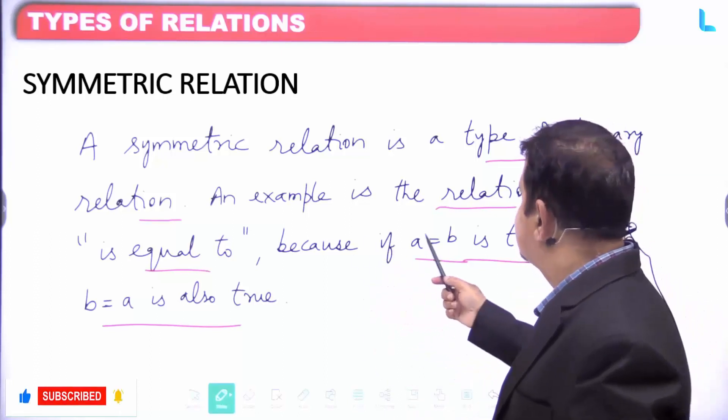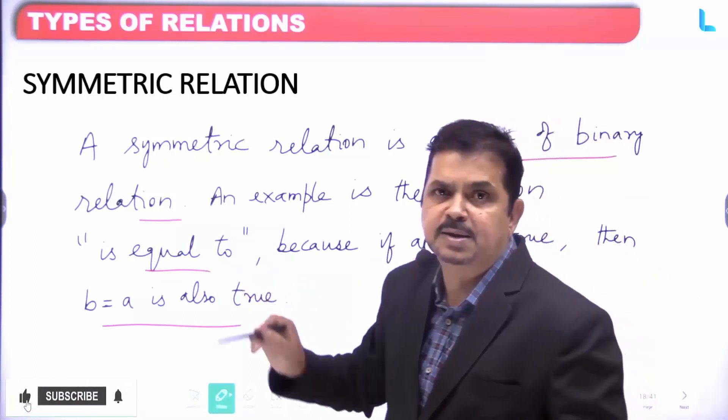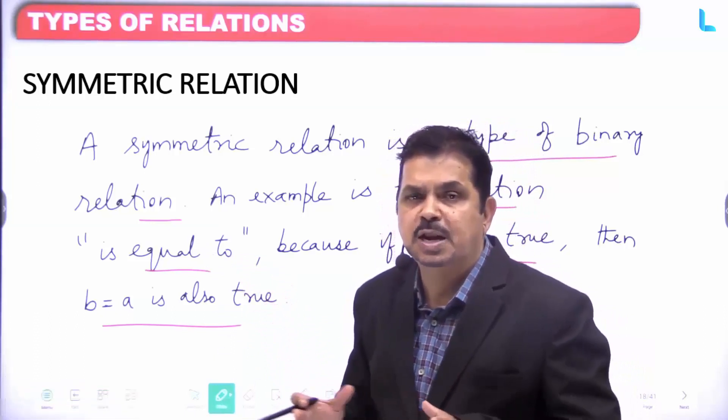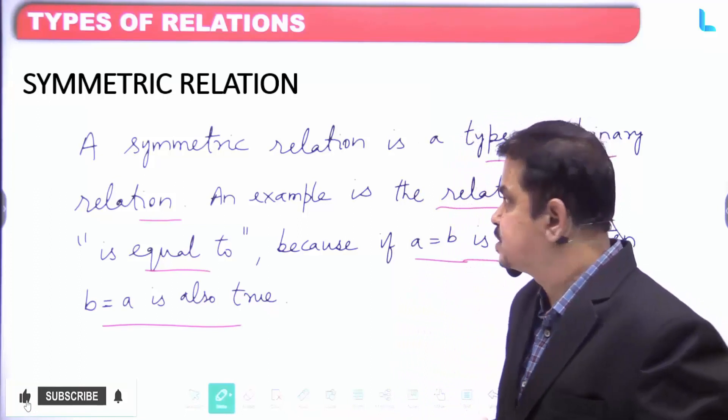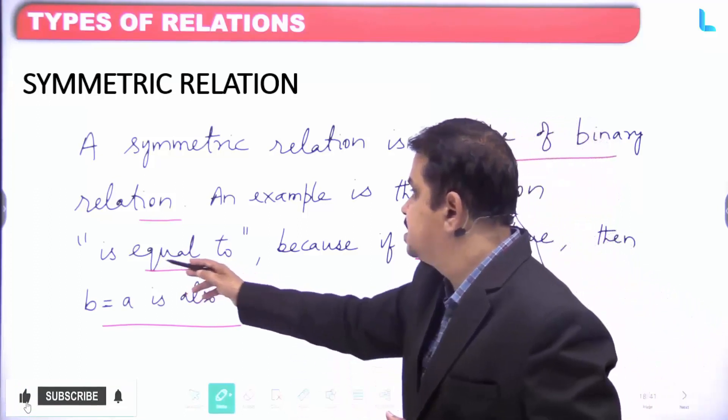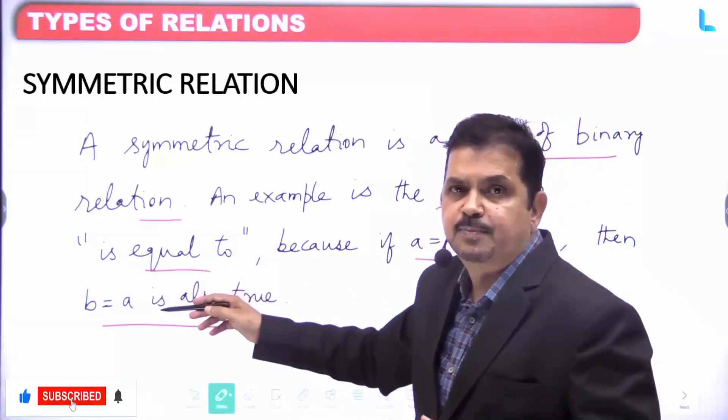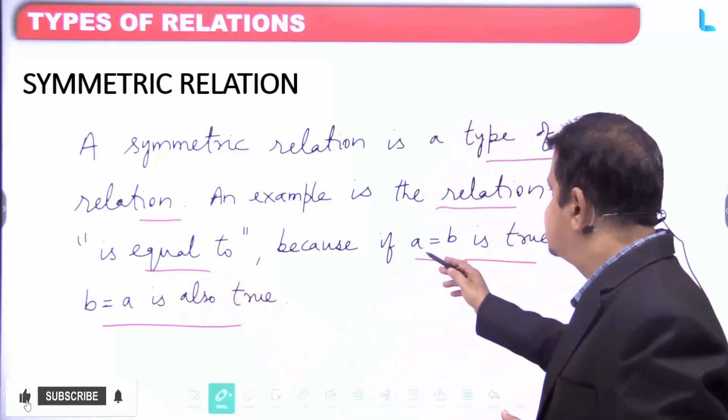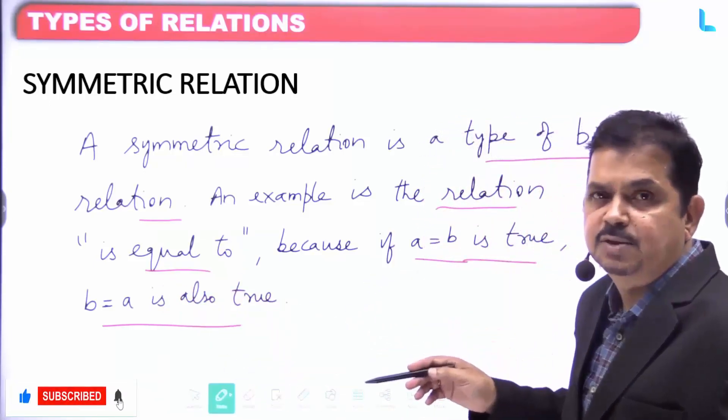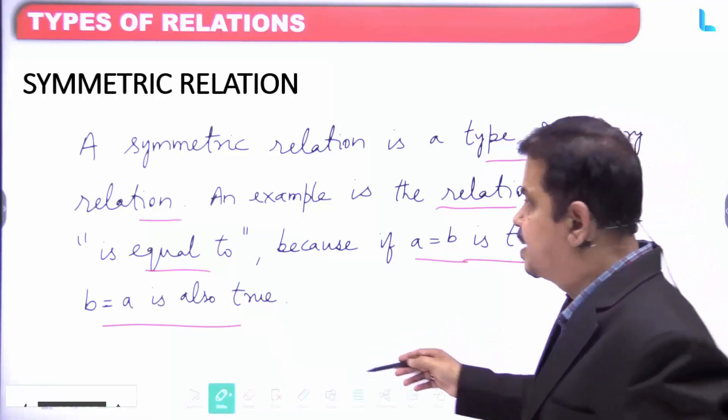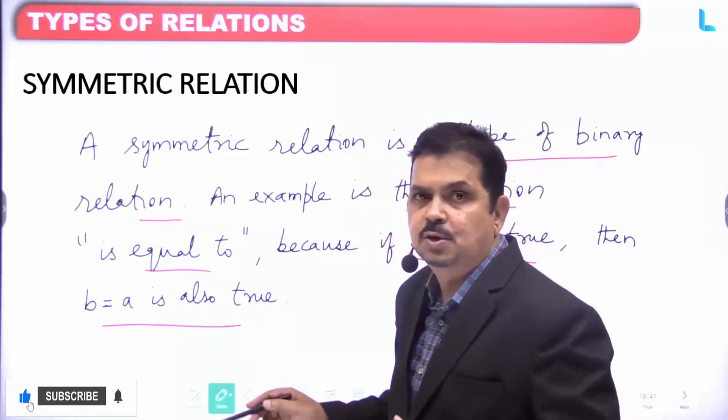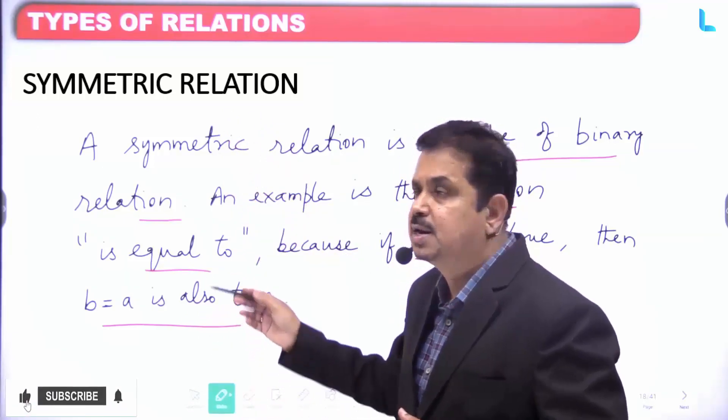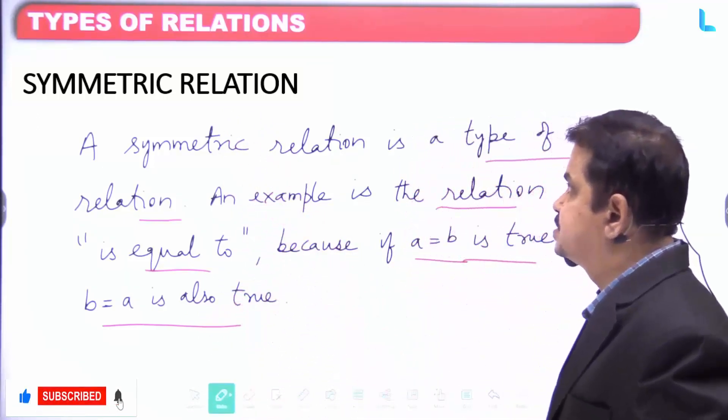A symmetric relation is a type of binary relation. Binary means when you are taking two elements, we can form a relation using 'equal to.' If you apply the relation 'equal to,' we can write a equals b. If a equals b is true, then b equals a is also true, forming a symmetric relation. I hope now you are clear with the symmetric relation.